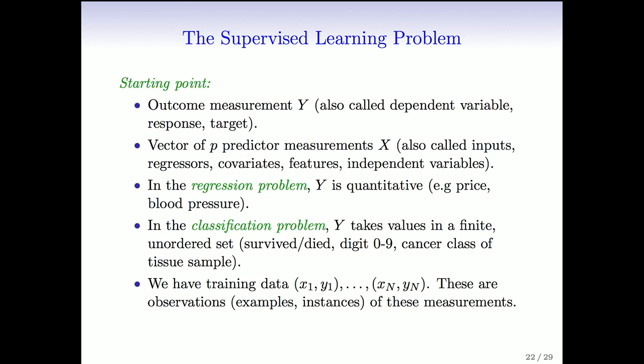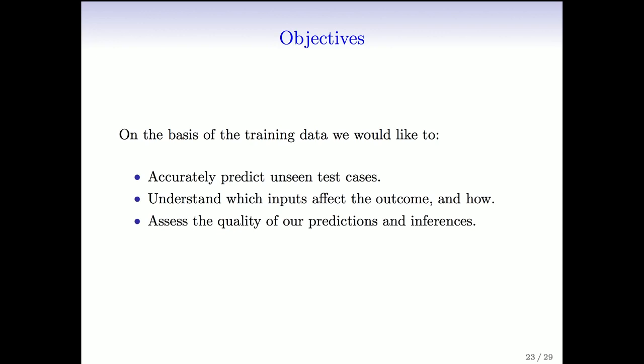We have training data pairs: x1, y1, x2, y2, up to xn, yn. Here x1 is a vector of p measurements, and y1 is usually a single response variable. The objectives of supervised learning are: on the basis of the training data, to accurately predict unseen test cases, understand which inputs affect the outcome and how, and to assess the quality of our predictions and inferences.